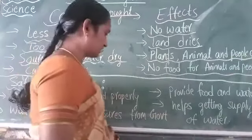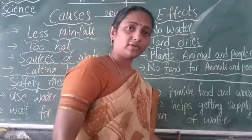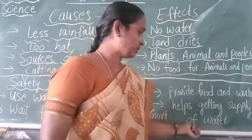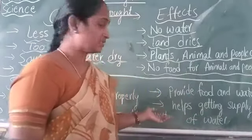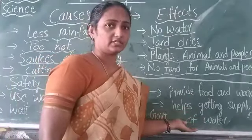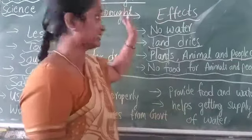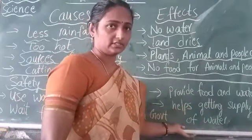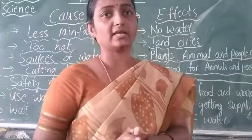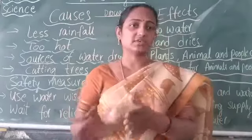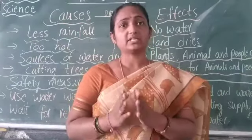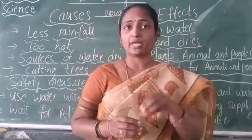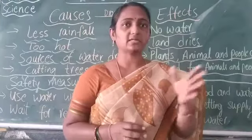We should also wait for relief measures from the government. The government will provide food and water, and help plan the supply of water for the future so that the region does not face drought again. Floods and drought are different: floods happen when there is heavy rainfall, and drought happens when there is less rainfall.